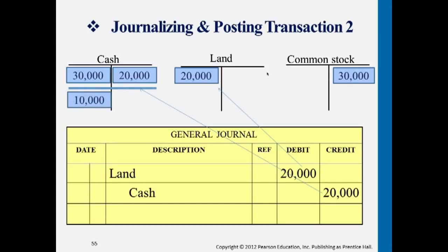If we draw a line under the cash account, remember the normal balance for cash as an asset account is on the left side — the side where the account increases. If these are the only two entries this month and we want to summarize, we draw a line and calculate the left side minus the right side. The net balance for cash is $10,000, posted on the left (normal balance) side.